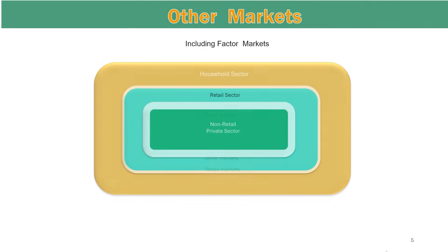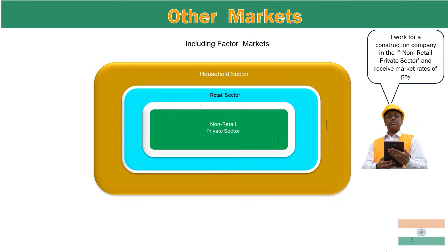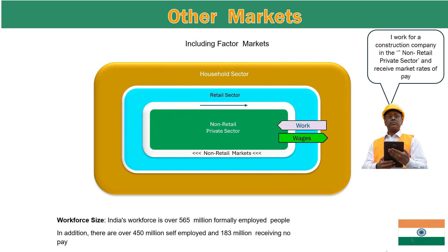These graphics highlight the non-retail private sector and the other markets. A householder is shown working in the construction industry, which is part of the non-retail private sector. His work is illustrated by the grey arrow and the corresponding wages by the green arrow. The non-retail sector supplies goods and services to households and the retail sector, and also interacts with the external economy. The white border around the dark green area represents some of the non-retail markets and their transactions.